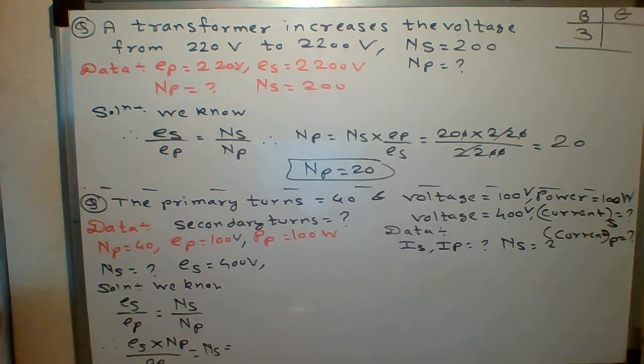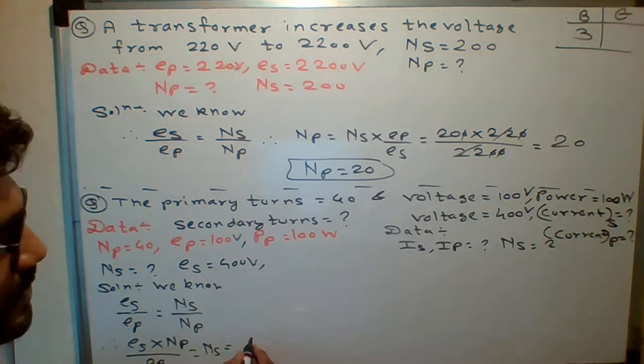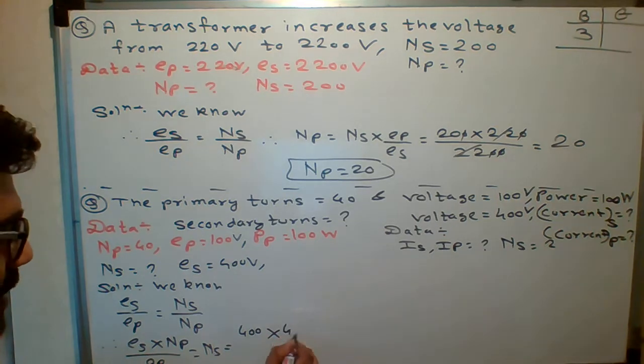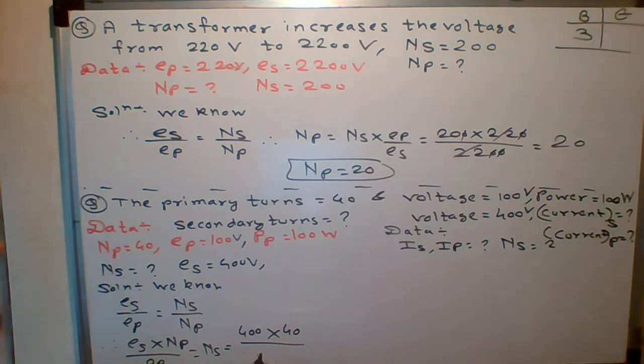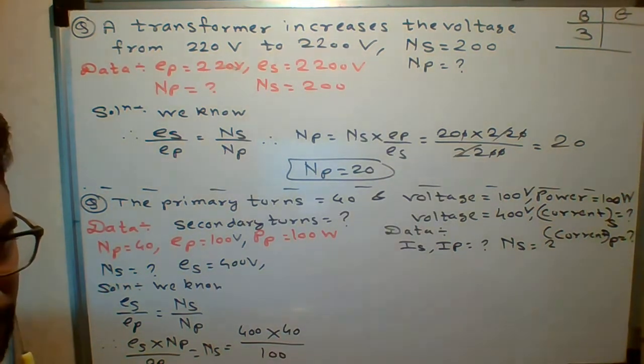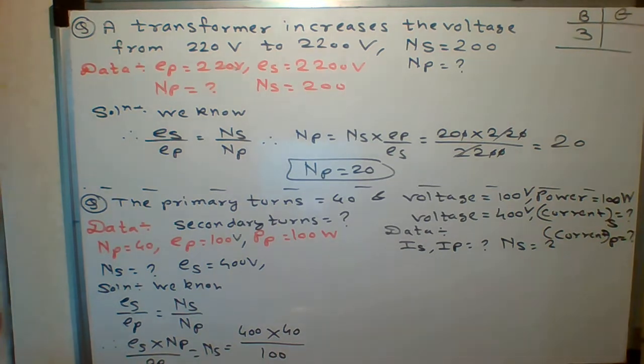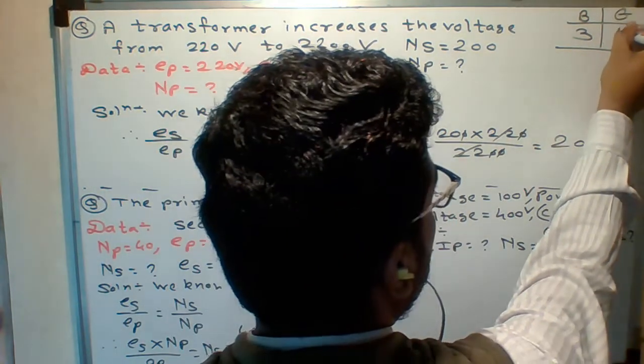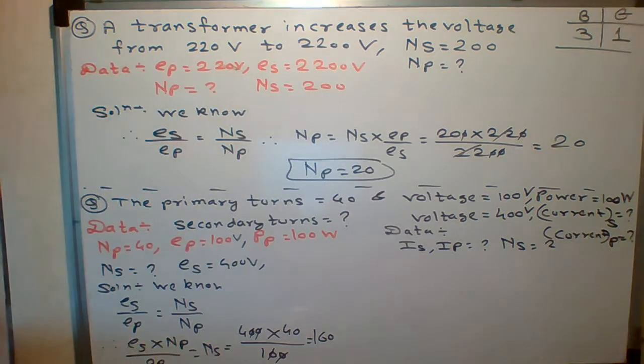Who will tell me the answer of NS. ES is how much. ES. ES. Yes. You know. Yes. 400. 400. Multiply by NP. NP is how much. 40. And EP is how much. 100. Okay. Asmita given 160. Shabbash. Asmita. Very good. 160. Very good. Asmita got one mark. Very good. Shabbash.